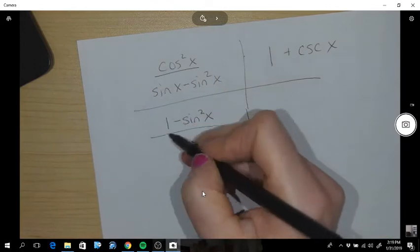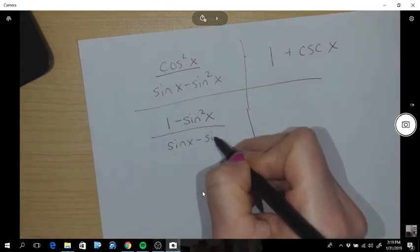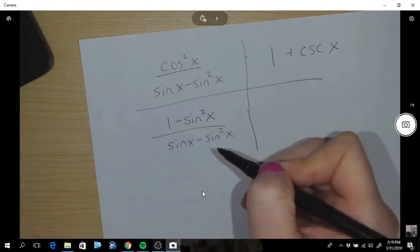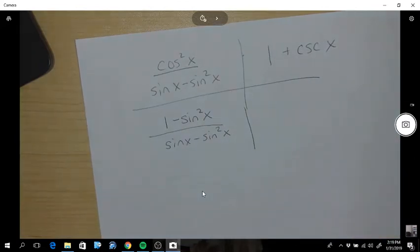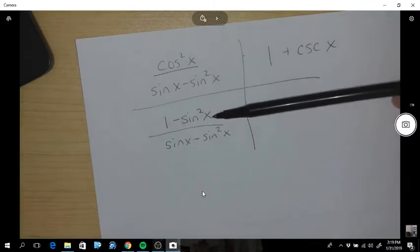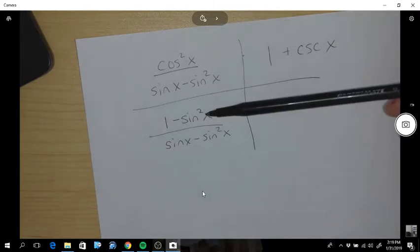And that's over sin x minus sin squared x. Okay. So, now I am going to factor some stuff around. So, I notice that this is a difference of squares.